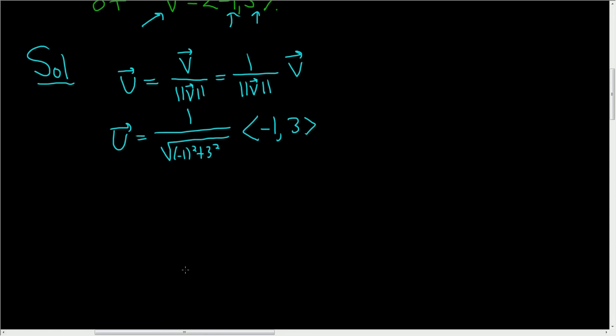Let's keep going. So we can simplify the denominator. Negative 1 squared is 1, and 3 squared is 9. And then we still have the vector here.